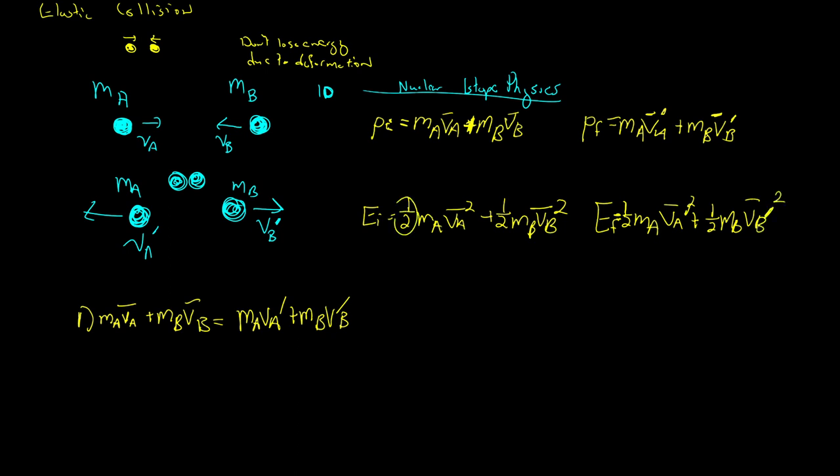But notice, each term has a one-half in it. So when I set these equal to each other, I can divide that one-half out. So I'm going to bring this down here because if this is equal to this and they each have a term of one-half, those one-halves cancel across the board, and we'll write this down here.